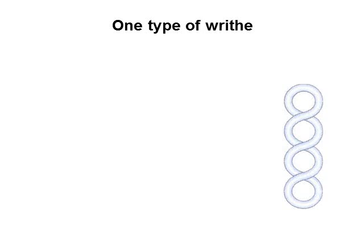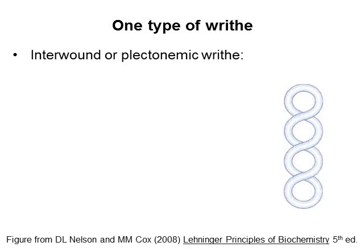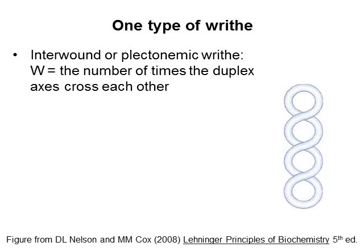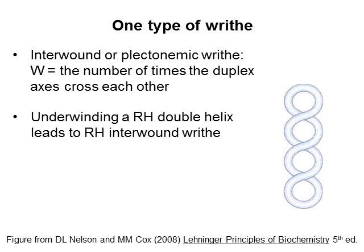There are two types of writhe. One is called interwound, or plectonemic writhe — I'll normally call it interwound writhe. You can see that the double helix crosses over itself. If you count the number of times the duplex axes cross each other, you have the value of the writhe. It turns out that when you underwind a right-handed double helix and let the twist return to 10 base pairs per turn by allowing supercoiling, the interwound writhe that results is right-handed. You'll be able to verify this in class when we use pieces of rope. When you underwind a right-handed helix, you always get right-handed interwound supercoiling, and not left-handed.